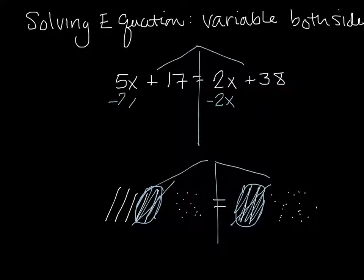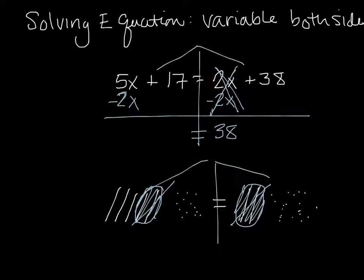So here I've subtracted 2x from both sides, and by doing that, this 2x and that 2x, they can zero pair out. And now I just have a 38 on this side, and then 2 of the x's cancel out with the 5x's, and so now I only have 3x's on this side.